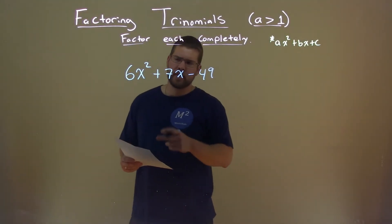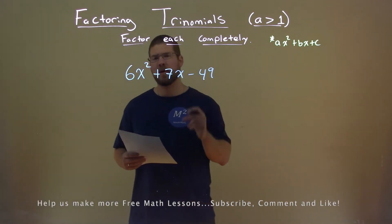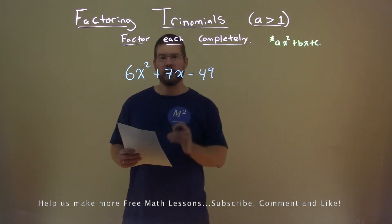We're given this problem right here: 6x squared plus 7x minus 49, and we need to factor this completely.